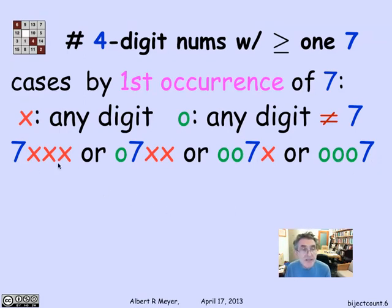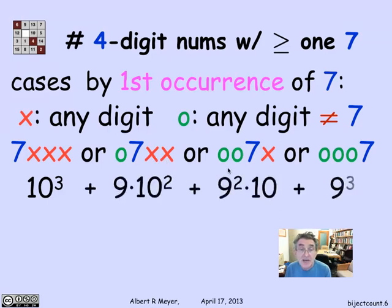These individual patterns are easy enough to count using the product rule. Here I have to count how many triples of any digits are there. There's 10 digits, so it's 10 cubed. Here, how many sequences where the first choice is 9, and the second two choices are 10, it's 9 times 10 squared. Here it's 9 squared times 10, and here it's 9 cubed.